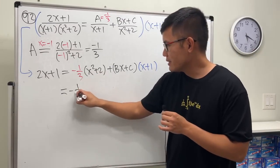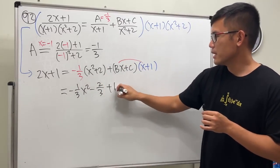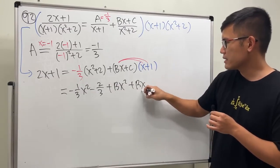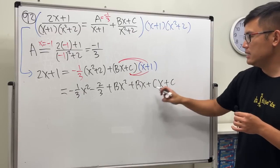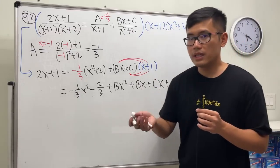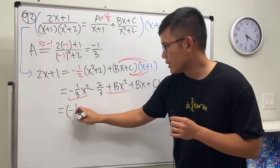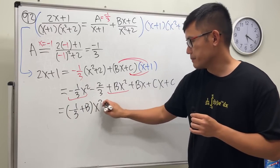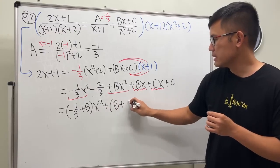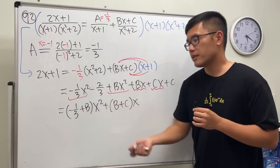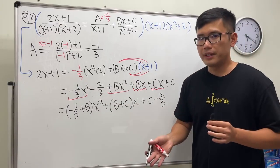So this is negative one third x squared minus two thirds. For the remaining term, just multiply it out: this is plus bx squared plus bx plus cx plus c. Next, we collect the coefficients. This and that both have the x squared term, so we can write negative one third plus b. Then we have bx and cx, so plus b plus c times x. Lastly, the terms with no x: plus c minus two thirds.